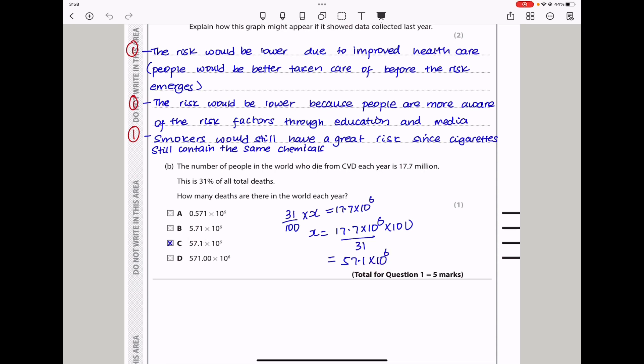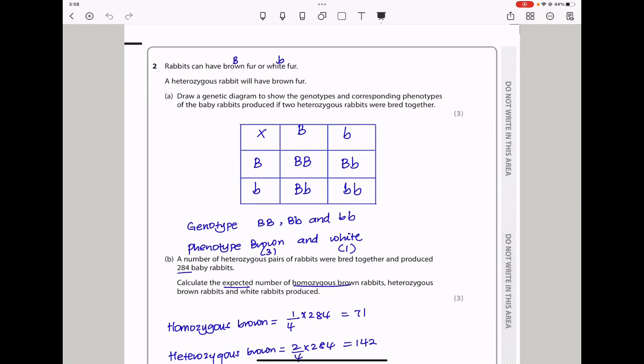This is the end of question 1. Let's continue to question 2. Question 2 says rabbits can have brown fur or white fur. A heterozygous rabbit will have brown fur. Draw a genetic diagram to show the genotypes and corresponding phenotypes of the baby rabbits produced if two heterozygous rabbits were bred together.